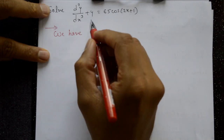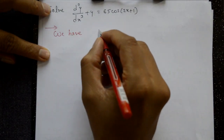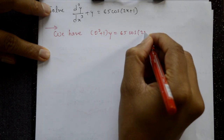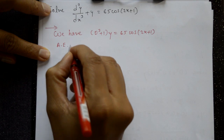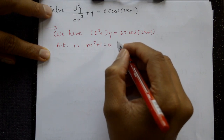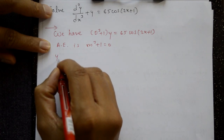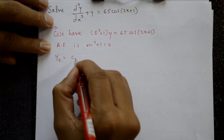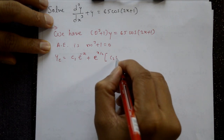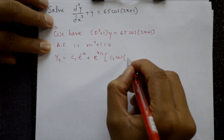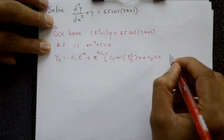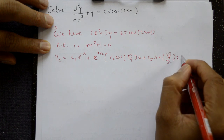Next problem: Solve d³y/dx³ + y = 65cos(2x + 1). The auxiliary equation is m³ + 1 = 0. The complementary function is: yc = C1·e^(-x) + e^(x/2)[C2·cos(√3/2·x) + C3·sin(√3/2·x)].